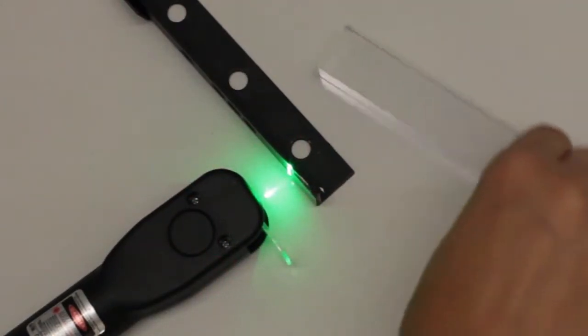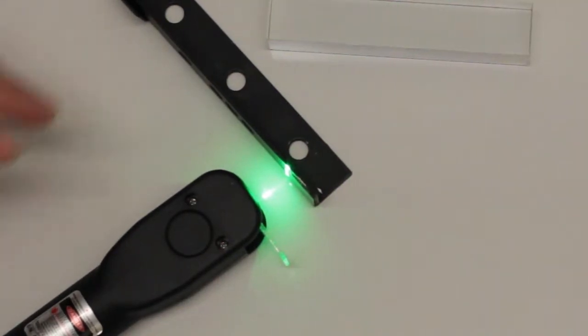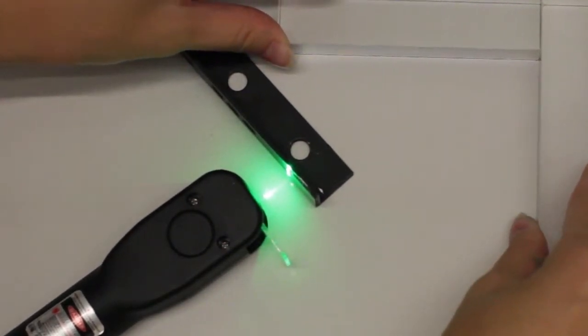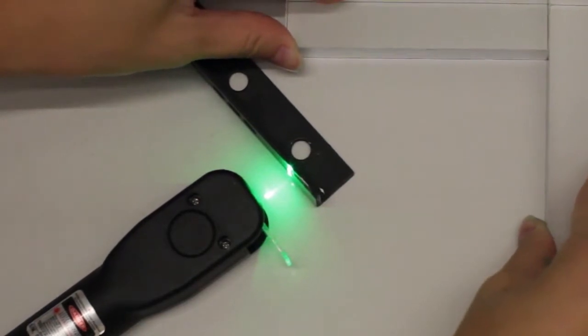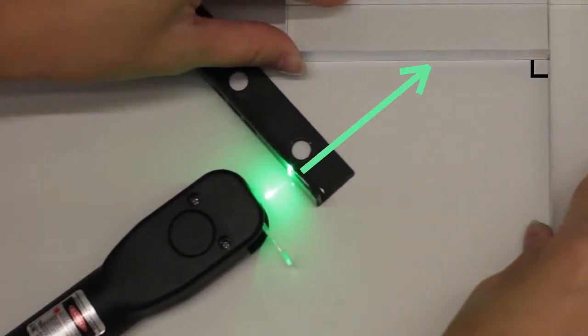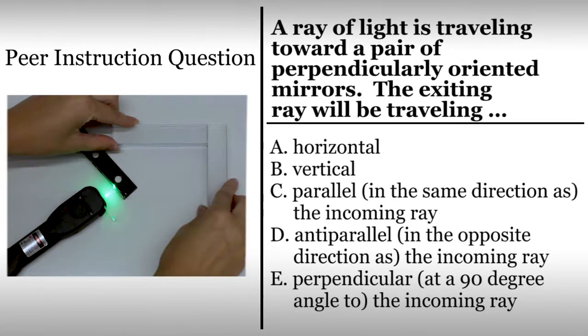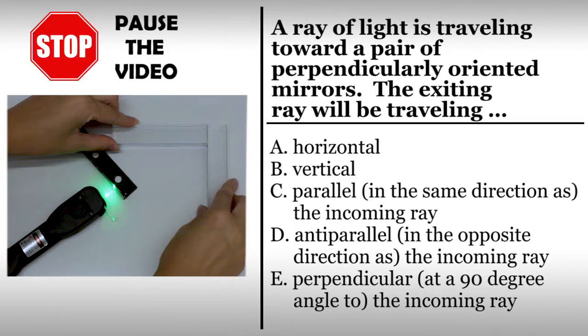Let's explore this further using a peer instruction question. Imagine that we have a pair of mirrors that are perpendicular. If we send a ray of light toward the surface of one mirror, presently blocked, what do you think will happen to the direction of the ray after it interacts with the mirrors? Classroom students should follow normal procedures or instructor guidelines. Viewers not in a classroom should record your vote and explain your reasoning on a piece of paper. Please pause this video and answer the question.